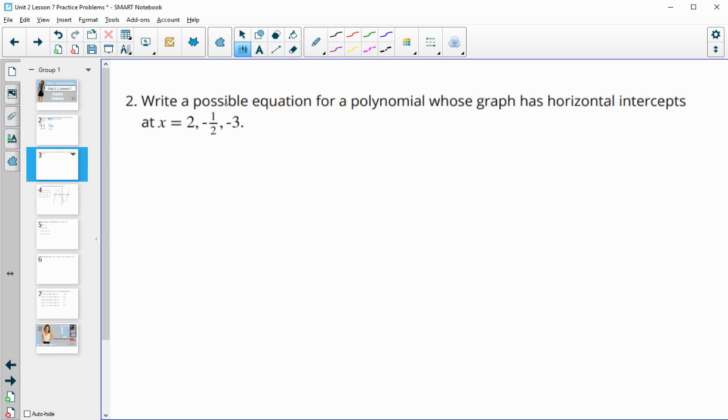Number two, write a possible equation for the polynomial whose graph has horizontal or x-intercepts at these values. We'll use the idea that we just did in the last function that the zeros are going to produce factors that are the opposite.